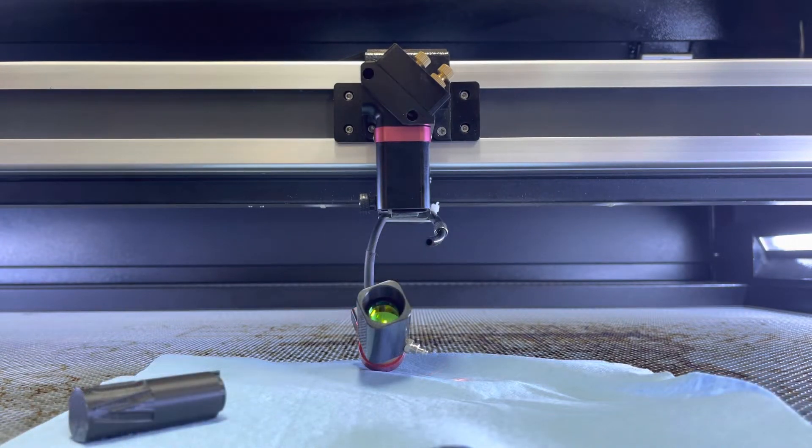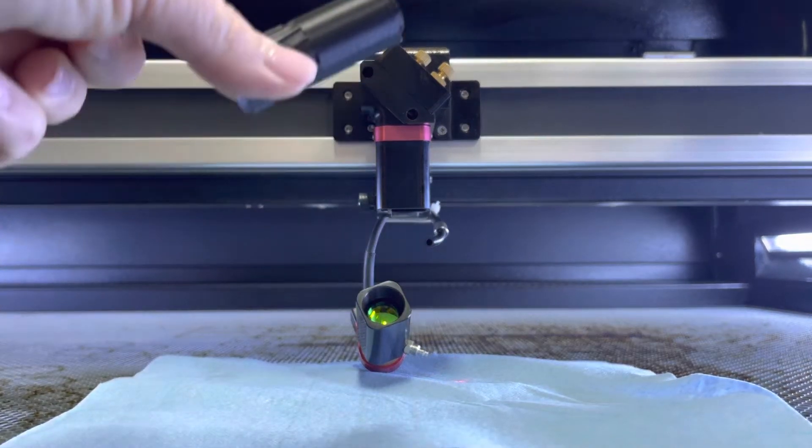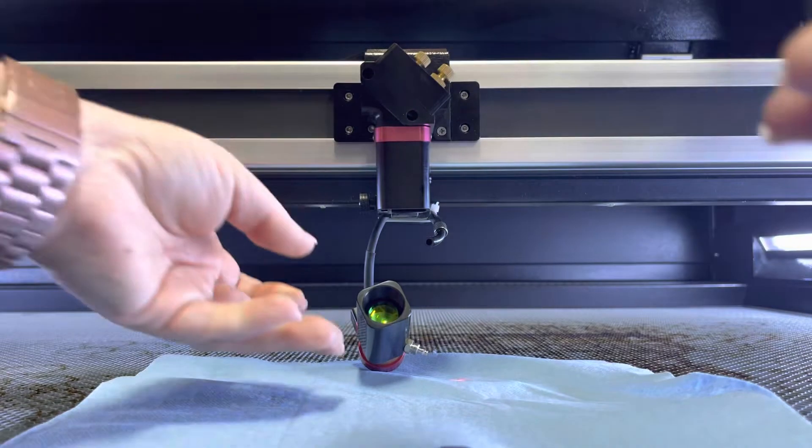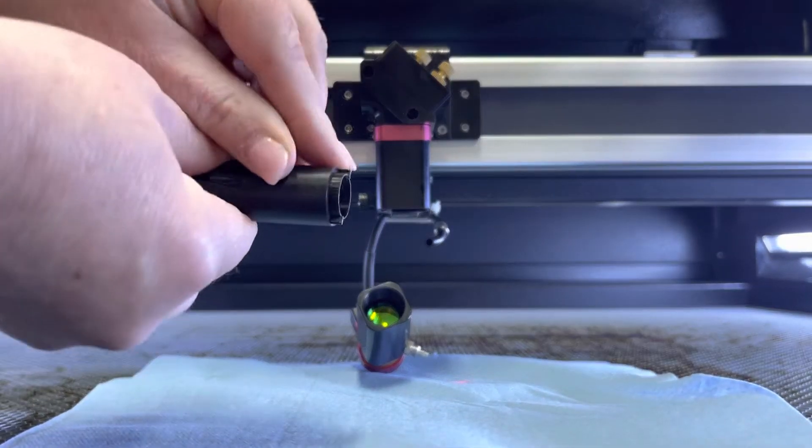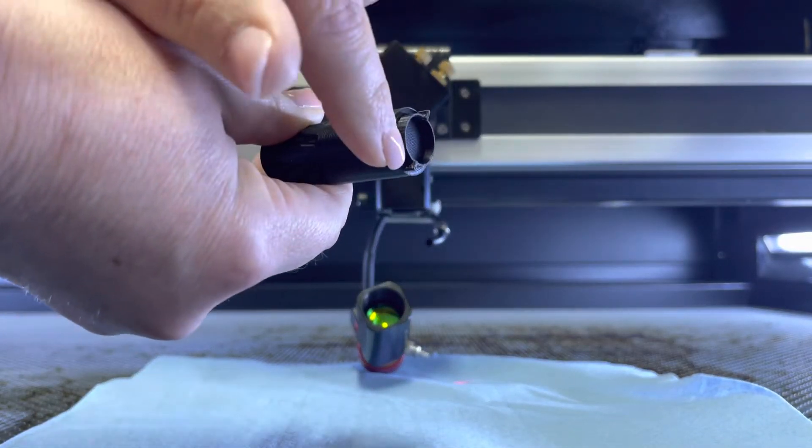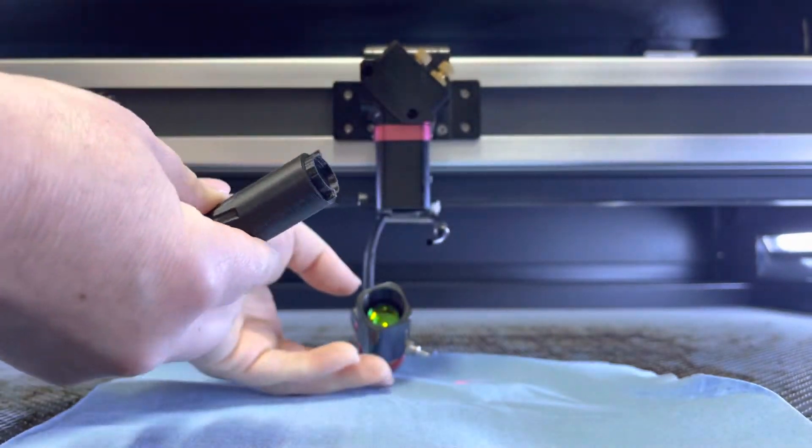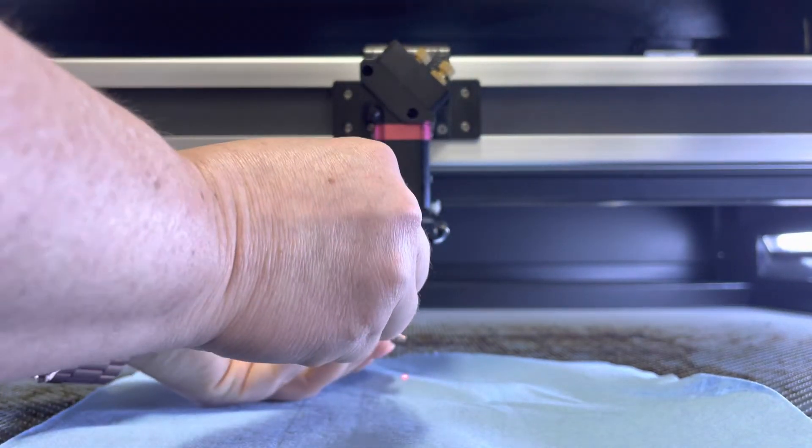So now that you have unscrewed your air hose and taken your lens out, you're going to use this little black tool to unscrew the lens. There are two little notches that go in two notches in the lens.